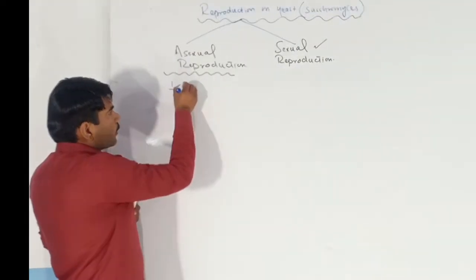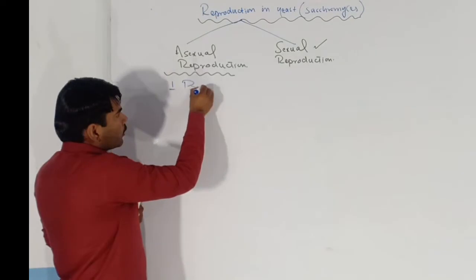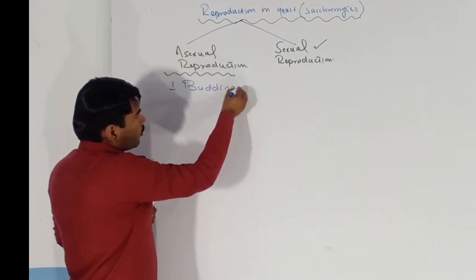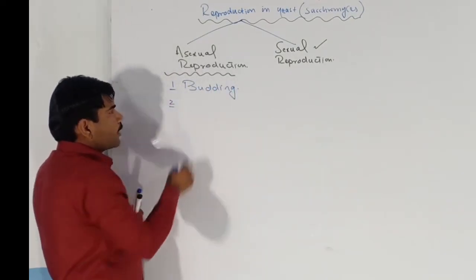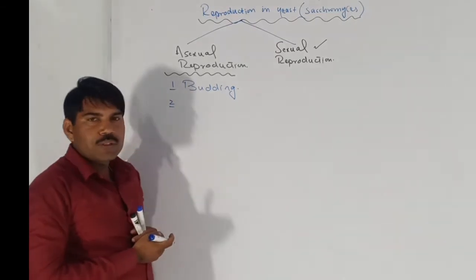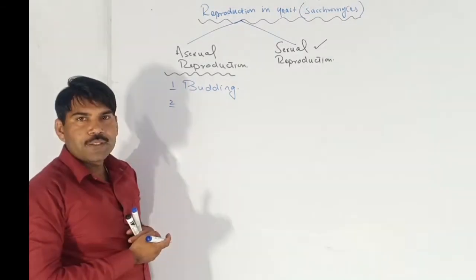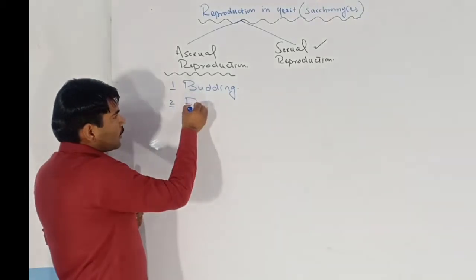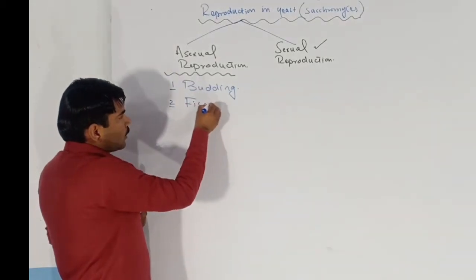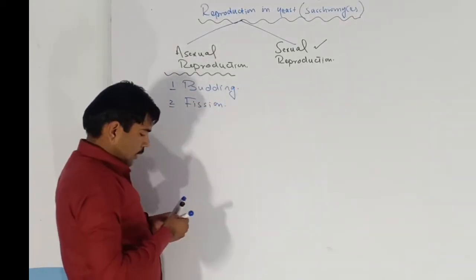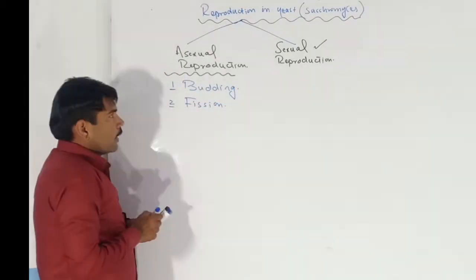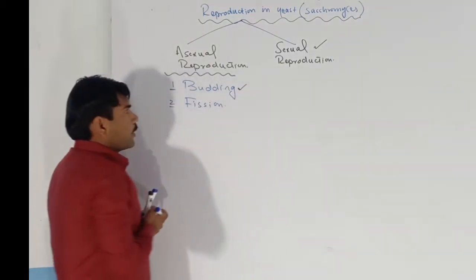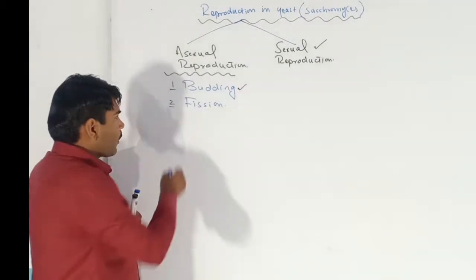There are two methods through which asexual reproduction takes place in yeast. The first method is known as budding, and the second method is known as fission. We will firstly discuss budding.